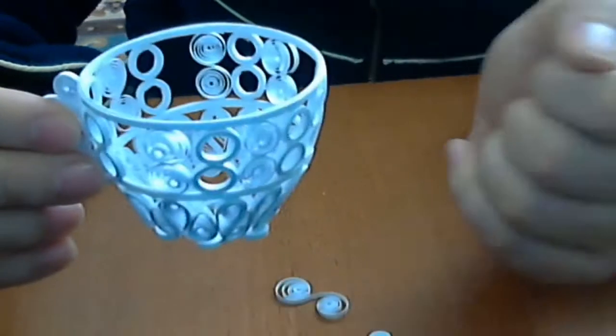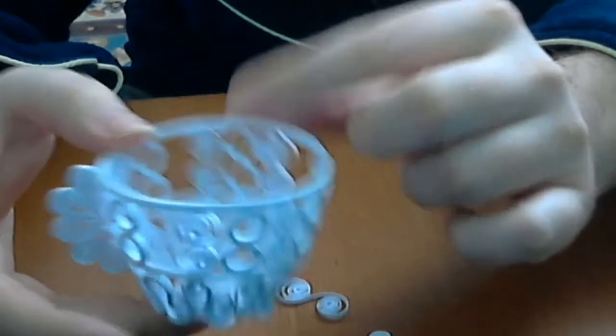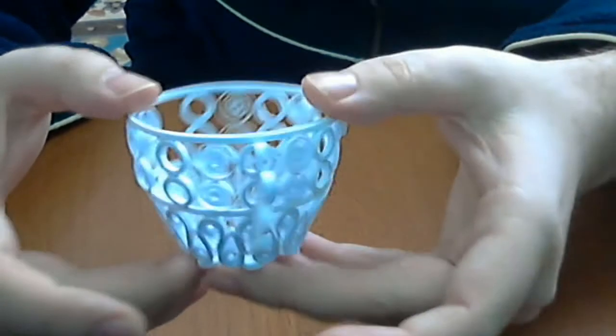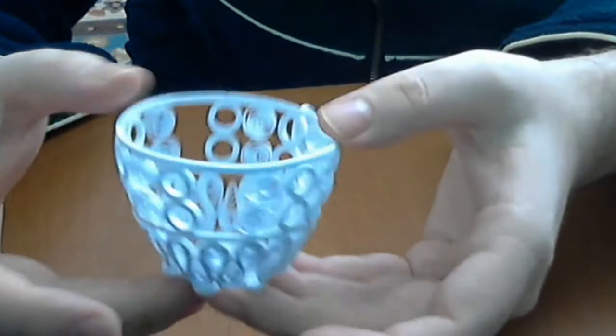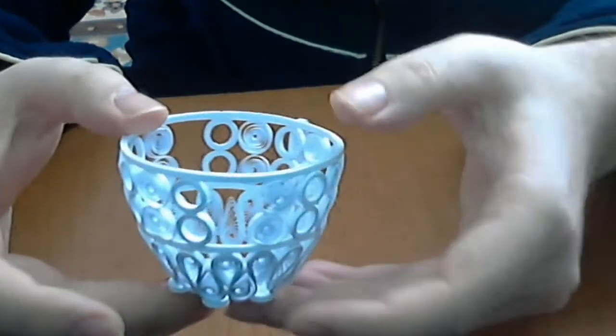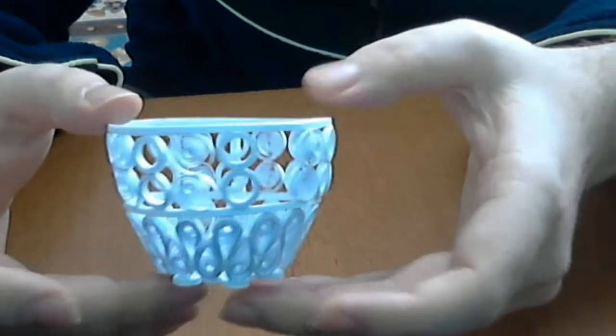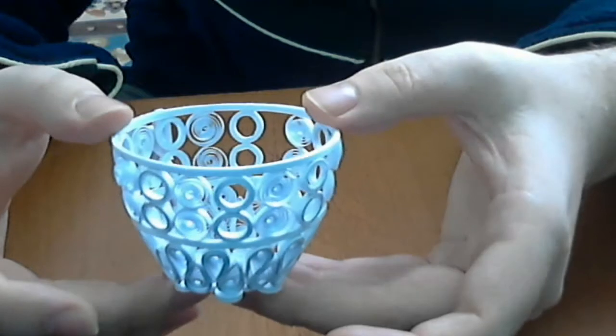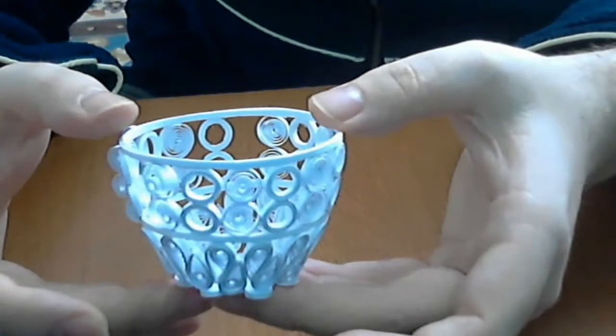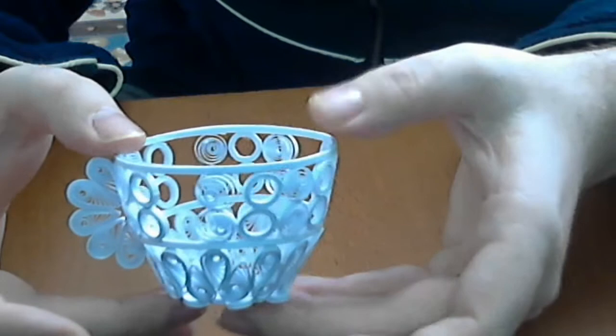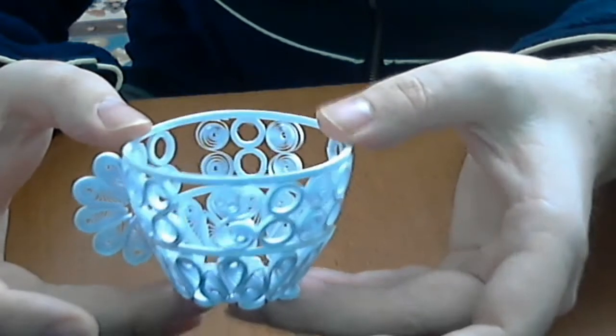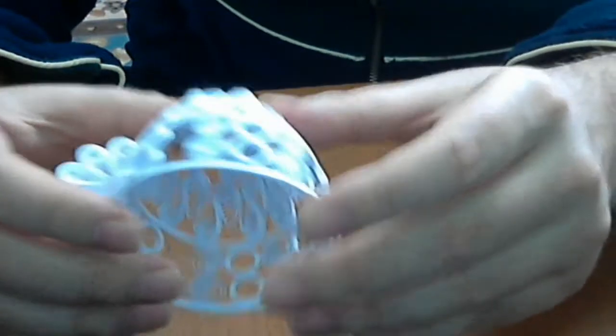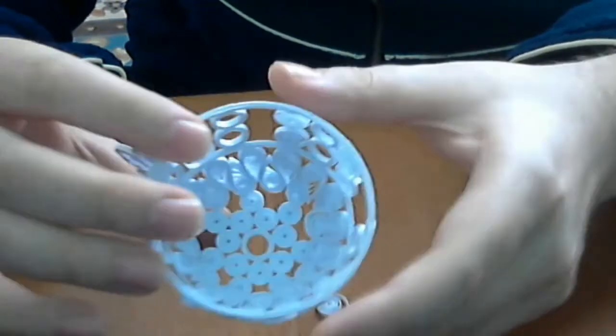I tried several papers. I tried to develop a technique to work with this 3D quilling. This is a thicker paper, 160g paper, and it is more solid and has more resistance.